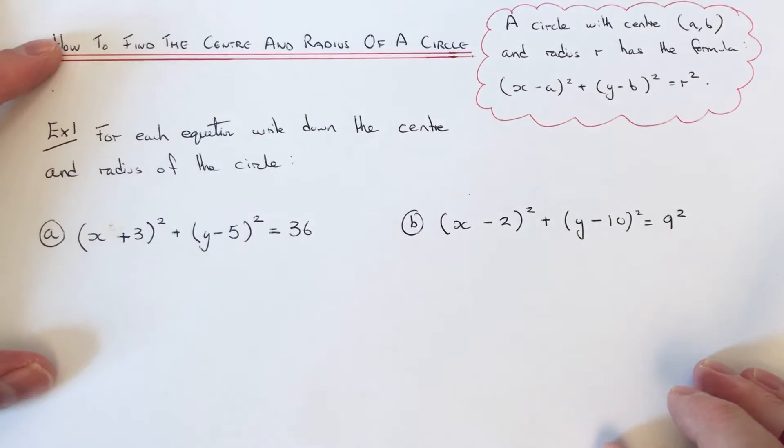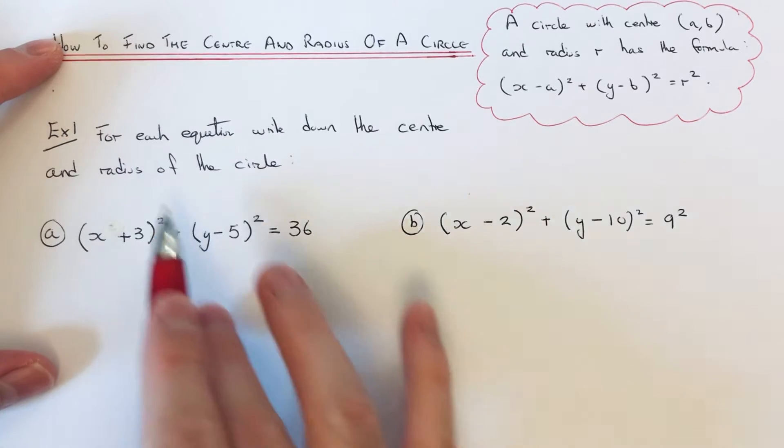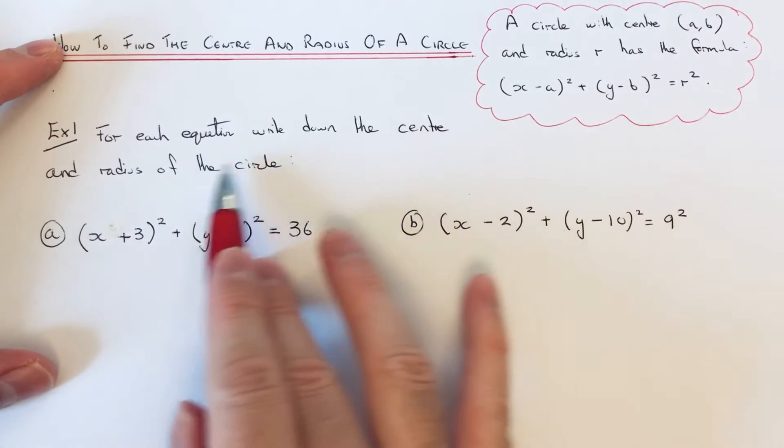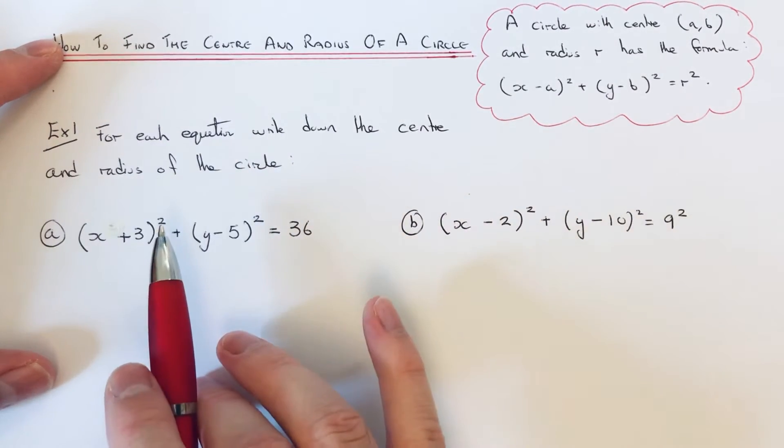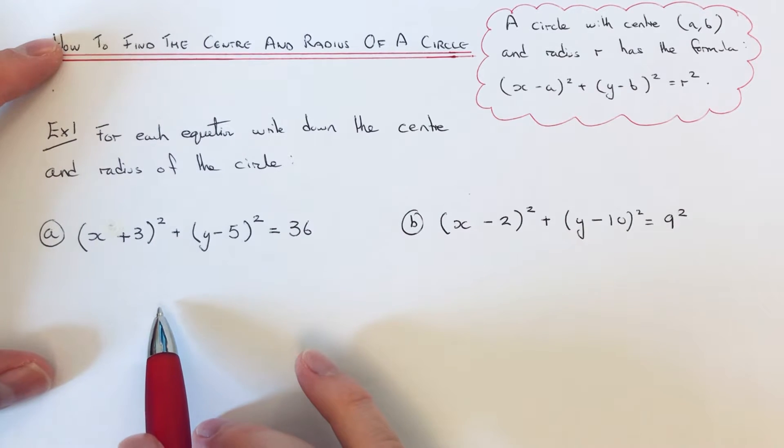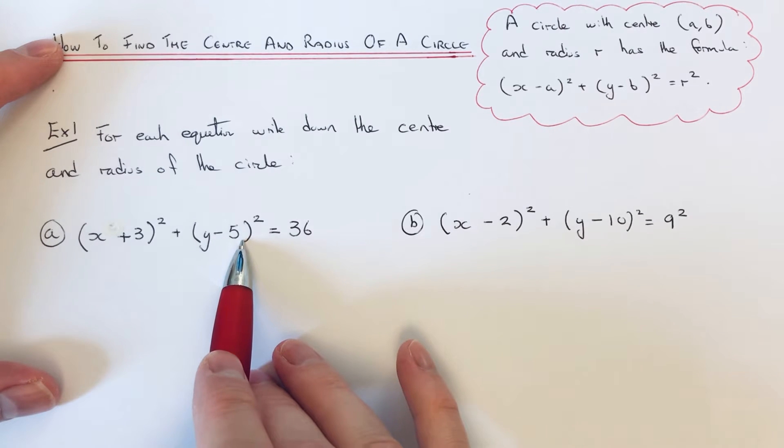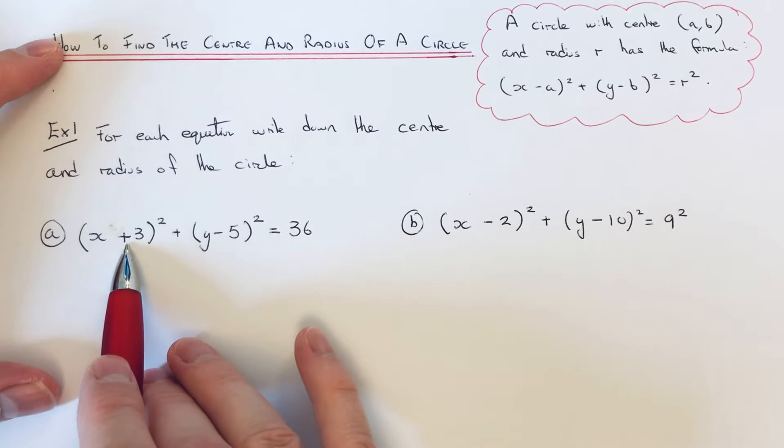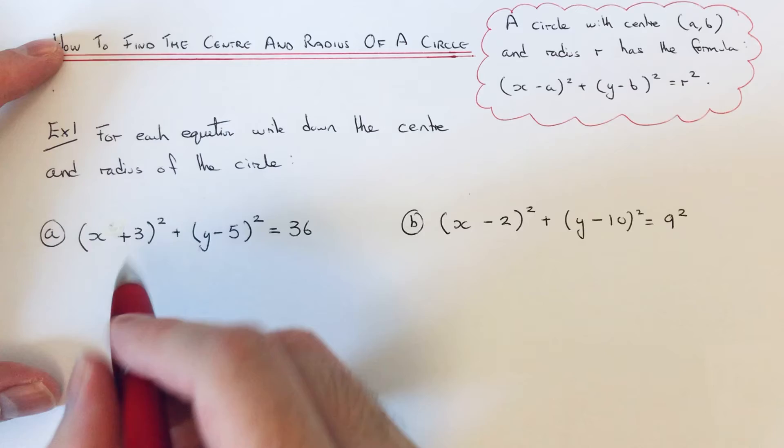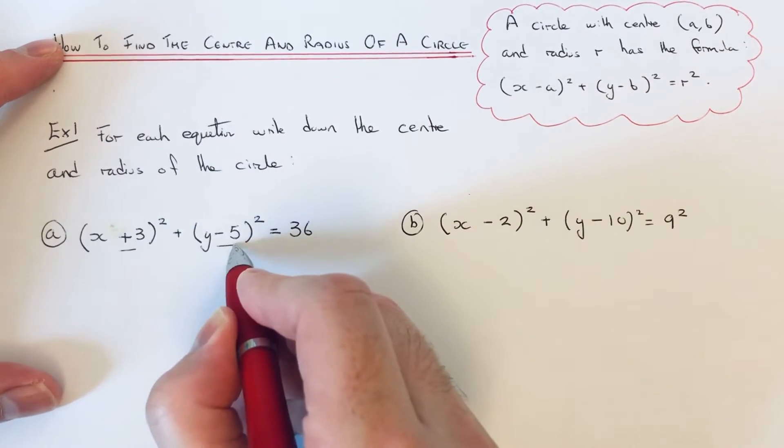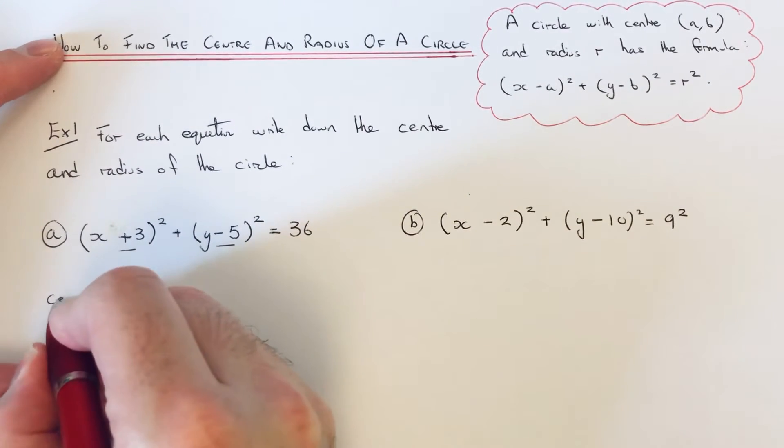OK, so let's have a look at the two examples here. So for each equation, write down the centre and radius of the circle. So to get the centre of the circle, we need to look at the numbers inside the bracket. OK, and we just need to change the sign of the two numbers here to get the centre of the circle.